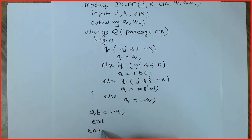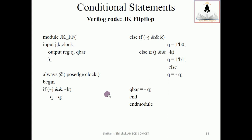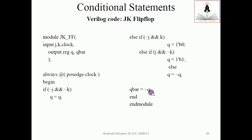This is the code for JK flip-flop — the same code that we worked on paper. Three inputs, two outputs declared as registers. You should not confuse: this if-else statement does not have begin and end, so we have end only for the always block. This QB equal to negation of Q is outside the if-else statement — it is not inside, it is outside the if-else statement.